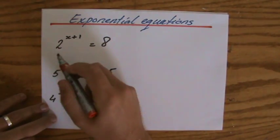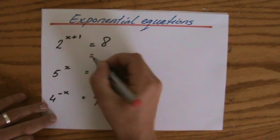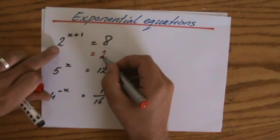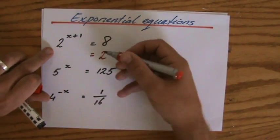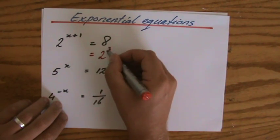First one, 2 to the power x plus 1. Then I have to rewrite the other side also with something with a base of 2. Those bases have to be the same. Now 8 is 2 to the power 2 times 2 times 2, so 2 to the power 3.